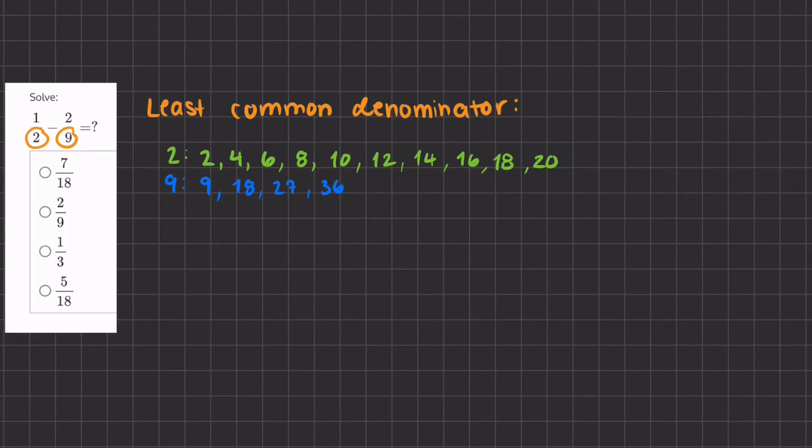Now in order to find the least common denominator, we can list out the multiples of 2 and 9, and find the multiple that is the lowest in common.